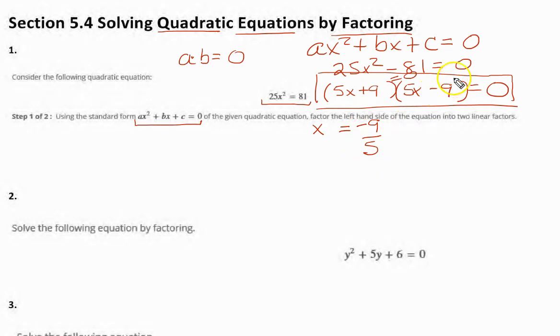And we get, then one of the answers is negative 9 fifths. And this one, when we transpose the 9, the negative 9 on this side, it becomes a positive 9. And again, dividing by 5, this would be a positive 9 fifths. So, there is the first example.